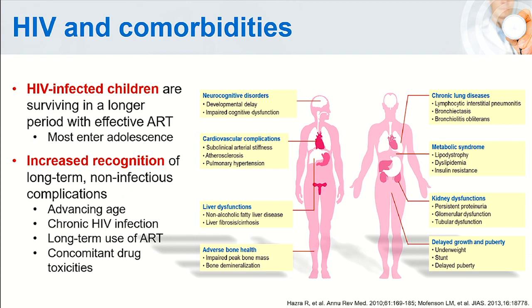Examples include neurocognitive disorders, cardiovascular complications, liver dysfunction, adverse bone health, chronic lung diseases, metabolic syndrome, kidney dysfunction, as well as delayed growth and puberty.